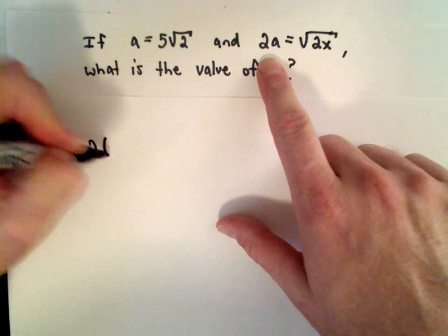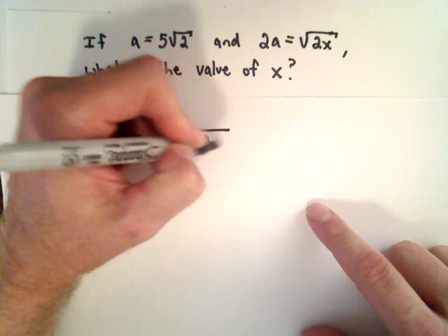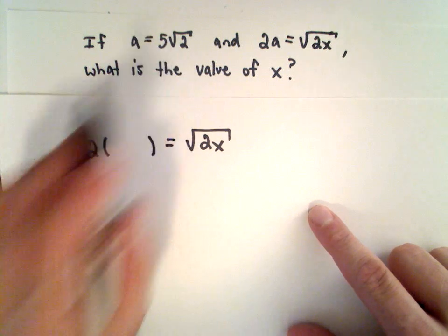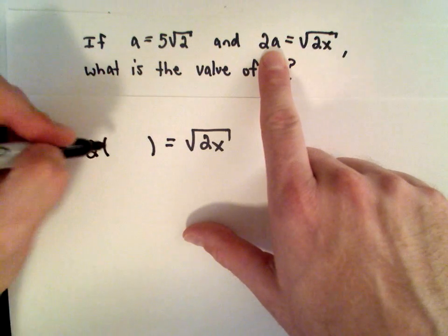We've got 2 times a equals the square root of 2x. We're told that a equals 5 times the square root of 2, so I'm going to replace the a with 5 times the square root of 2.